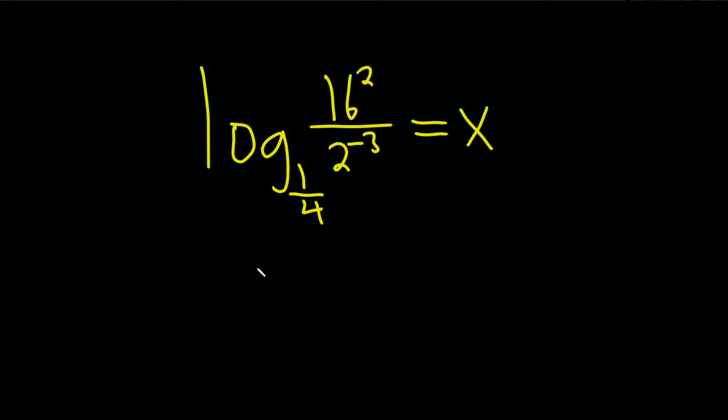We have to solve this equation for x. Let's start by writing it in exponential form. So this is our base, so it'll be 1 fourth to the x. So 1 over 4 to the x equals all of this stuff here.